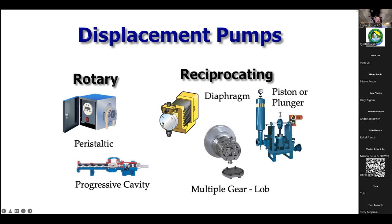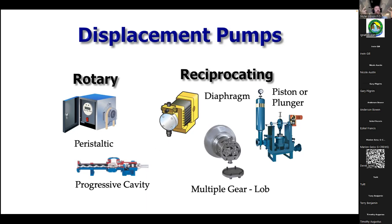A diaphragm pump has a flexible diaphragm with a rod attached. As the rod pulls back it draws fluid into the created space. Through two check valves — one on top and one on bottom — fluid is drawn in and then pushed out. This pump generally has two controls: speed, which is how fast it moves, and stroke, which is how far the rod pulls back on the elastomer diaphragm before returning to the pump cycle.